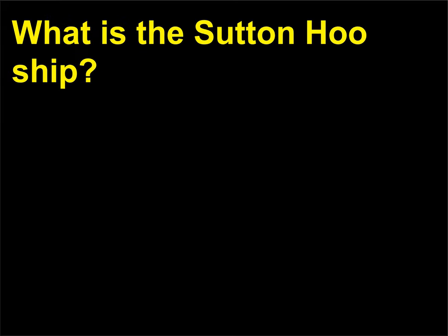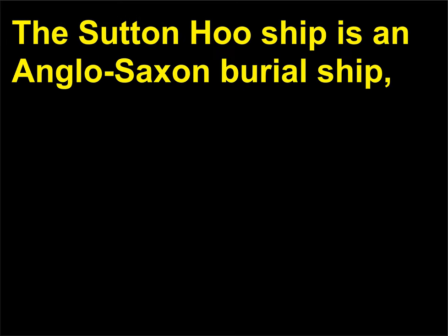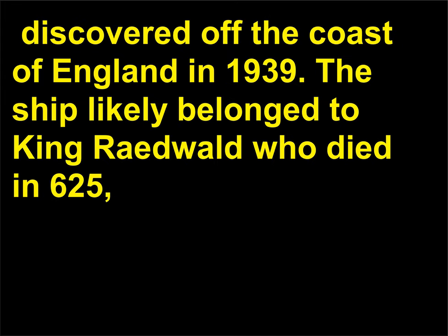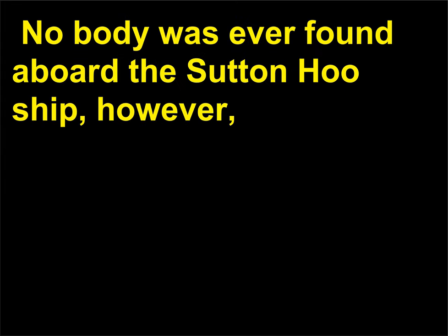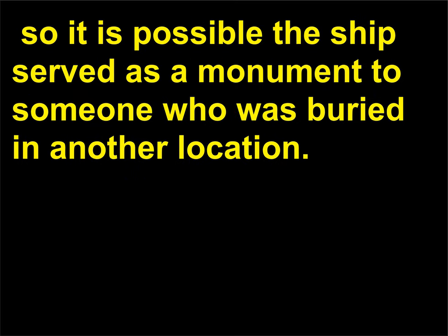What is the Sutton Hoo ship? The Sutton Hoo ship is an Anglo-Saxon burial ship discovered off the coast of England in 1939. The ship likely belonged to King Raedwald who died in 625, and was purposefully sunk as a funerary memorial. No body was ever found aboard the Sutton Hoo ship, however, so it is possible the ship served as a monument to someone who was buried in another location.